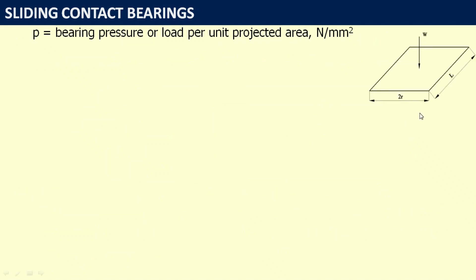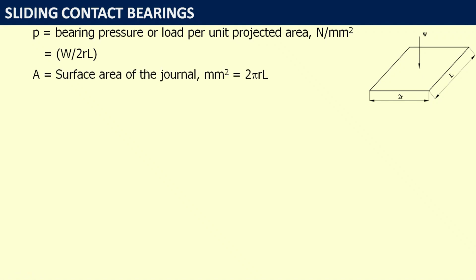The projected area of the journal has width 2r and length L, so the bearing pressure p equals W divided by 2rL. The surface area A of the journal equals 2πrL. The coefficient of friction is denoted f.